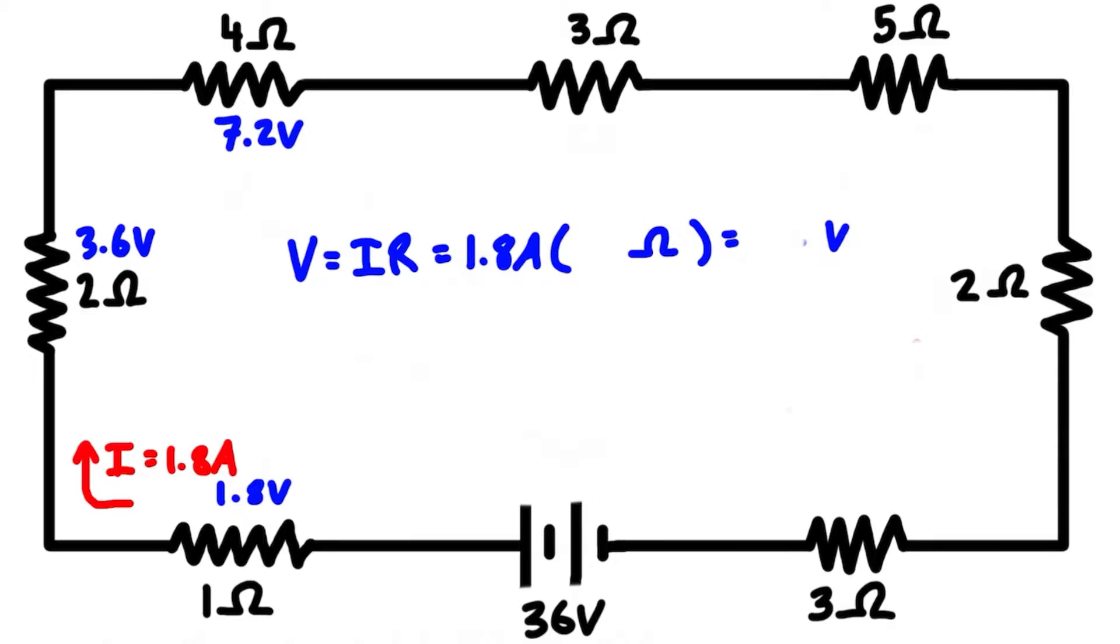For the next one, the top middle resistor is 3 ohms, and 3 ohms times 1.8 amps is 5.4 volts. Then we keep going: 1.8 amps times 5 ohms gives us 9 volts, so this is a 9 volt drop.